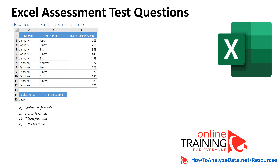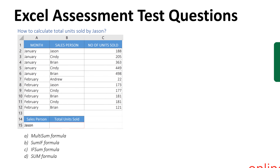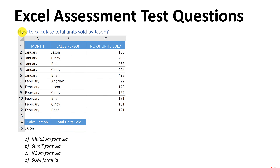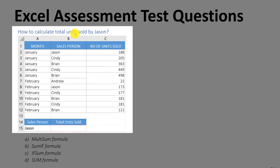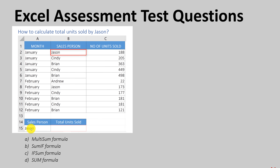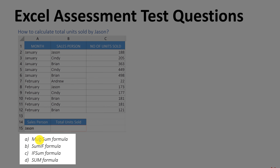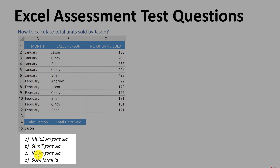Very frequently, you might be asked how to solve a specific problem during an Excel assessment test. For example, in this question, you will be asked how to calculate the total units sold by Jason. You are presented with a table showing months, salesperson, and number of units sold. One of the salespeople is Jason, but there are also others. The choices are: multi-sum, SUMIF function, IF-SUM function, or SUM formula.